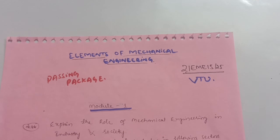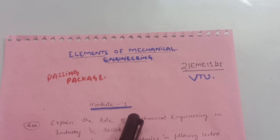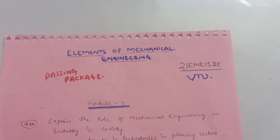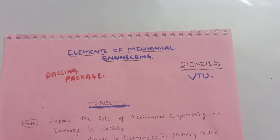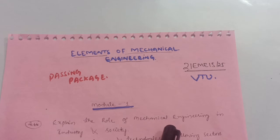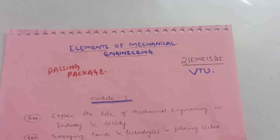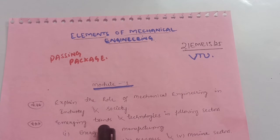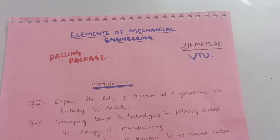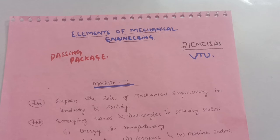Let me discuss the passing modules. Module 1 is the first passing module. You have to cover some important theory questions like: explain the role of mechanical engineering in industry and society. Next, emerging trends and technologies in sectors like energy, manufacturing, automotive, aerospace, and marine sectors.